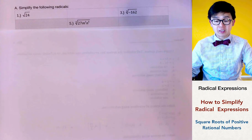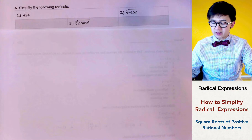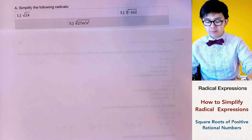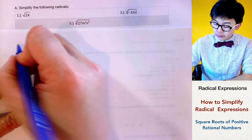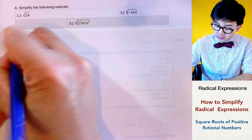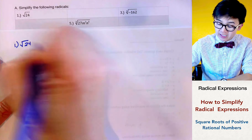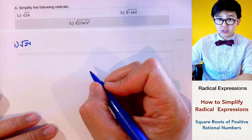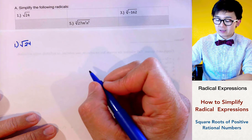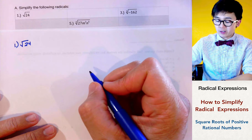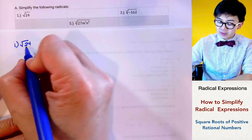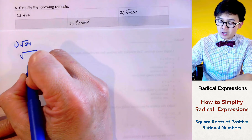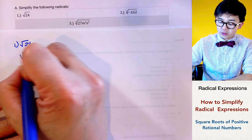We're going to be simplifying some radical expressions, starting with square roots and cube roots. For problem number one, we have the square root of 24. The idea of simplifying square roots is to find factors of your number that are perfect squares or perfect cubes depending on your root. Since we have a square root, we factor 24 into 4 and 6, which gives us a perfect square.